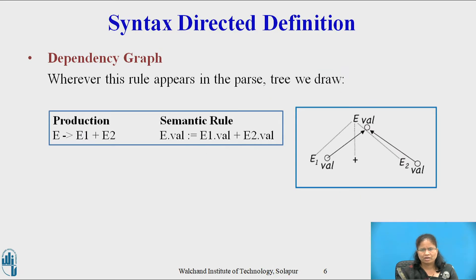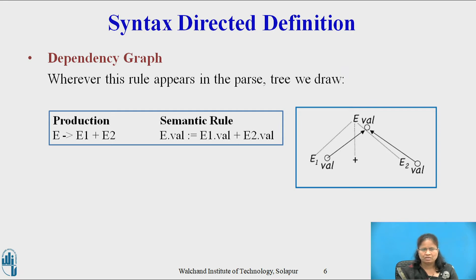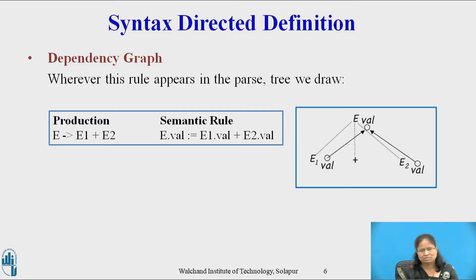Whenever the following production is used in the parse tree, we add the edges as shown in the figure to the dependency graph. The three nodes of the dependency graph marked by dark circles represent the synthesized attributes E.val, E1.val, and E2.val at the corresponding nodes in the parse tree. The edge to E.val from E1.val shows that E.val depends on E1.val, and the edge to E.val from E2.val shows that E.val also depends on E2.val. The dotted line represents the parse tree and is not part of the dependency graph.